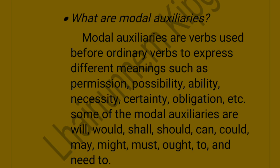Now moving into modal auxiliaries — but first, let us see what an ordinary verb is. When 'do' has its own meaning rather than a grammatical function as an auxiliary, it is treated as an ordinary verb. Modal auxiliaries are verbs used before ordinary verbs to express different meanings such as permission, possibility, ability, necessity, certainty, and obligation. Some of the modal auxiliaries are: will, would, shall, should, can, could, may, might, must, ought to, and need to.